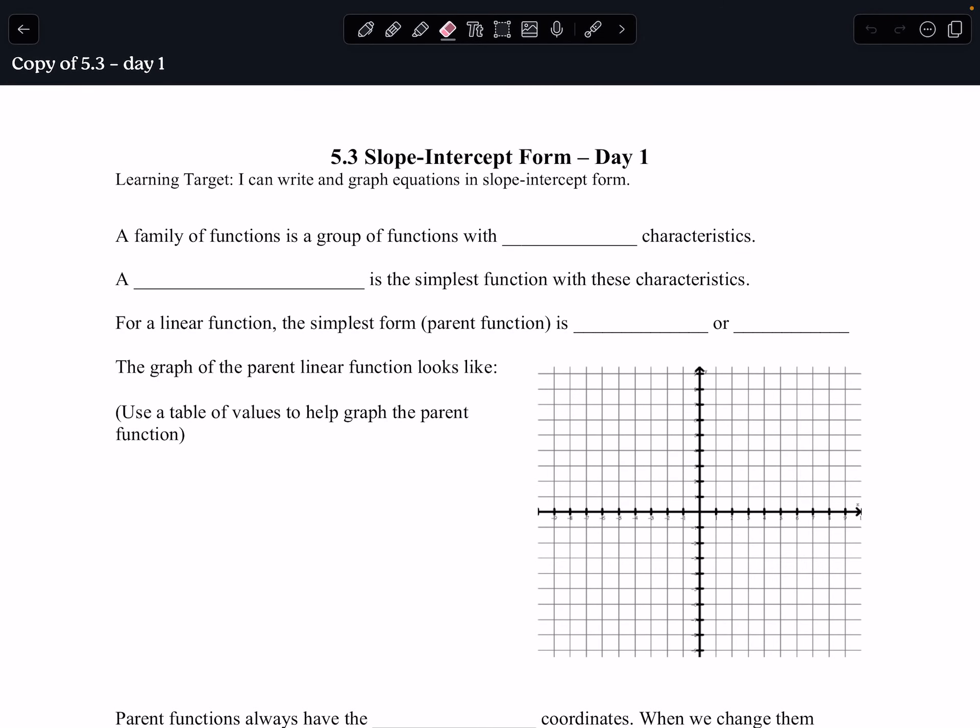Okay, we are going to start working on slope-intercept form. We're going to kind of skip around on this because I know that we've covered some, but I'm going to give you the basic information. A family of functions is a group of functions with common characteristics.